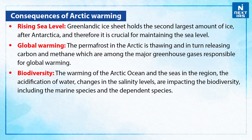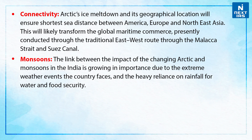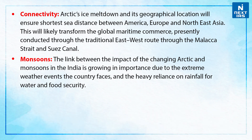Third, biodiversity: the warming of the Arctic Ocean and surrounding seas, the acidification of water, and changes in salinity levels are impacting biodiversity, including marine species and the species dependent on them. Fourth, connectivity: Arctic ice melt and its geographical location will ensure the shortest sea distance between America, Europe and Northeast Asia, likely transforming maritime commerce presently conducted through traditional east-west routes via the Malacca Strait and the Suez Canal. Fifth, monsoons: the link between a changing Arctic and monsoons in India is growing in importance due to the extreme weather events the country faces and its heavy reliance on rainfall for water and food security.